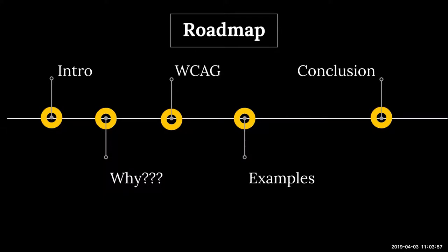Before we get into introductions, I'm going to go through my roadmap for the day. Start off with an intro, then move into the section called 'Why' — why is it so hard, why is mobile accessibility this dark, scary space? From there, I'll talk about the WCAG criterion, especially a focus on the 2.1 update. Then the large bulk of my talk is practical examples — things I've seen in the wild, things that drive me crazy. And then I'll wrap it up with a conclusion. Hopefully I'll have enough time for questions at the end.